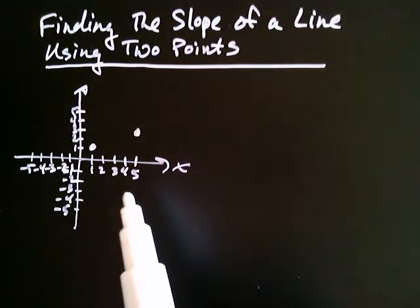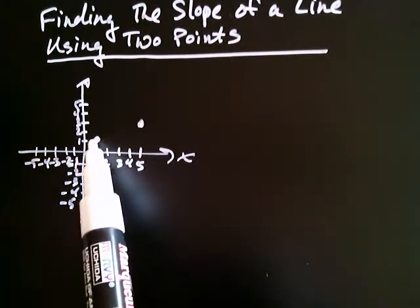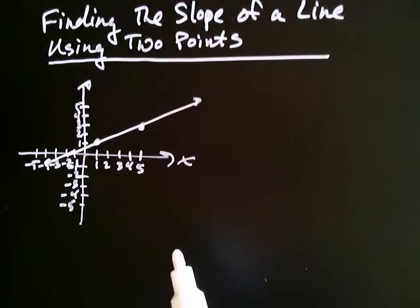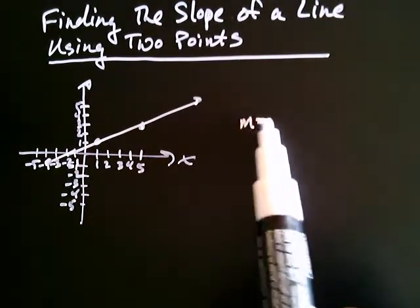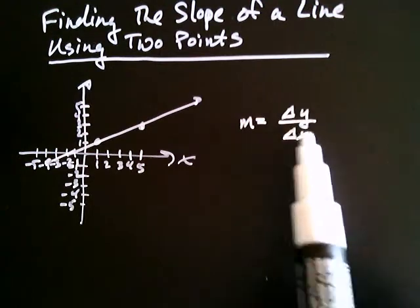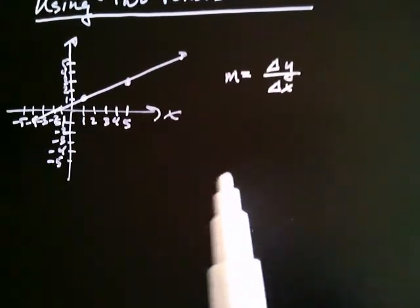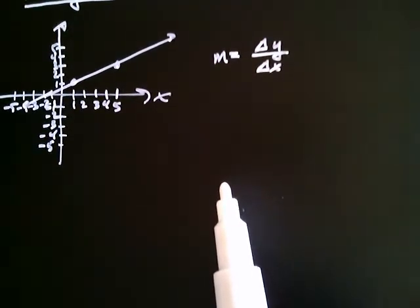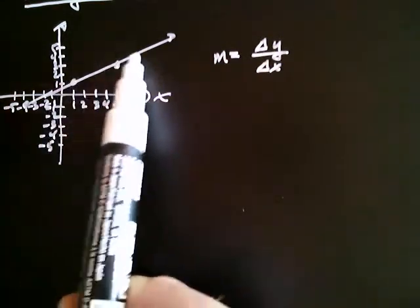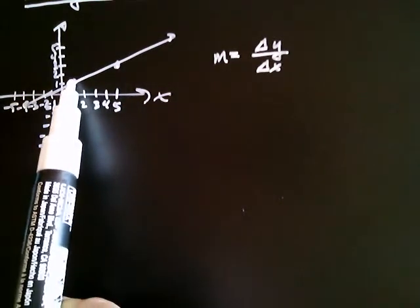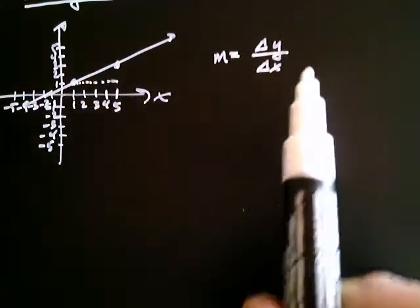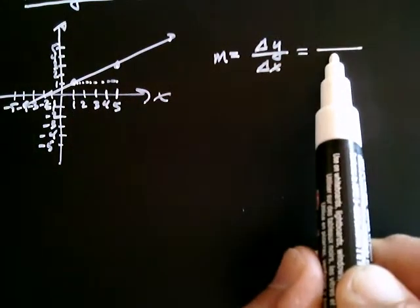Let's say you graph the line through these two points. So when you graph that line, here's what you'd get — you'd get that line. So we know already how to find the slope of this line. Recall that the slope is: you take how much y changes by and divide it by how much x changes by. So x starts at one and goes all the way to five. So x changed by four.